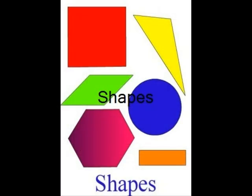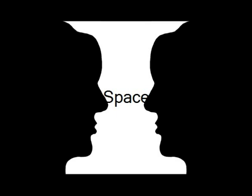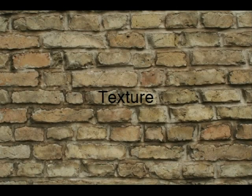A shape is a 2D area enclosed by lines or curves. There is positive and negative space: positive space is what we take up and negative space is what is there. Texture is what an object looks or feels like.